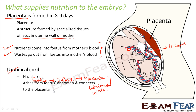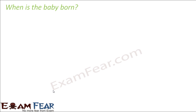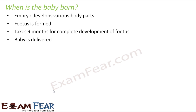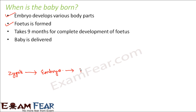Now we know the embryo keeps developing, but when is the baby ready to be born? The development happens gradually — the embryo develops various body parts to form a fetus. Immediately after fertilization, a zygote is formed — a single cell structure — which undergoes repeated cell division to form a multi-cell structure and later forms the embryo. When the embryo has developed the various body parts, it is no longer called an embryo but a fetus.